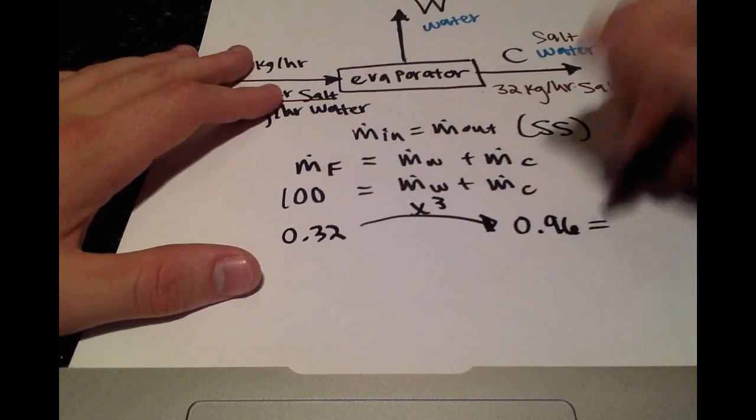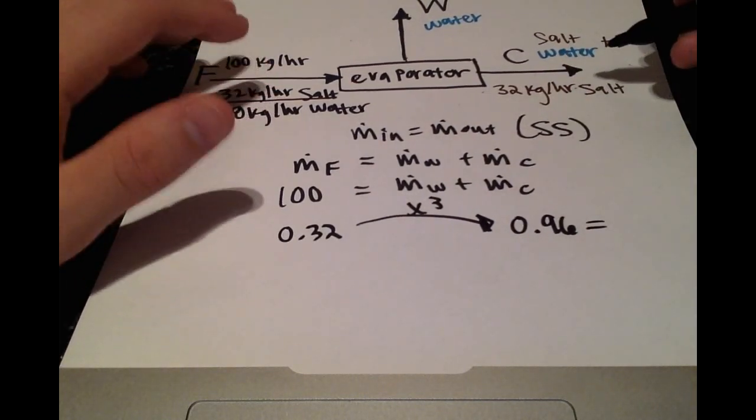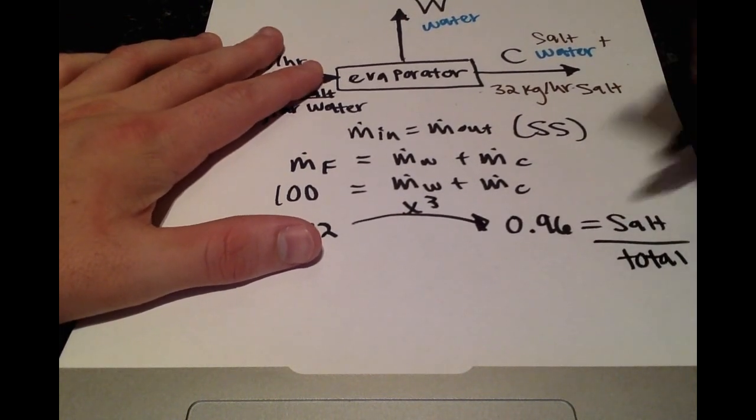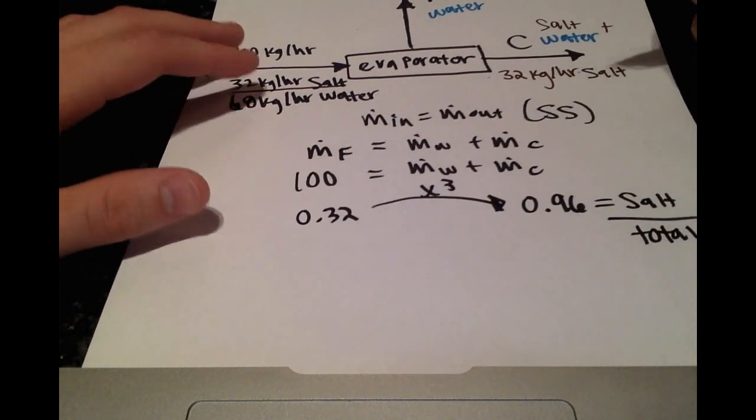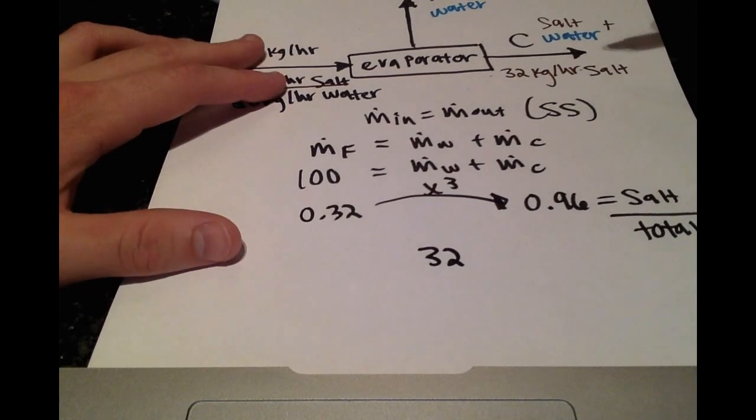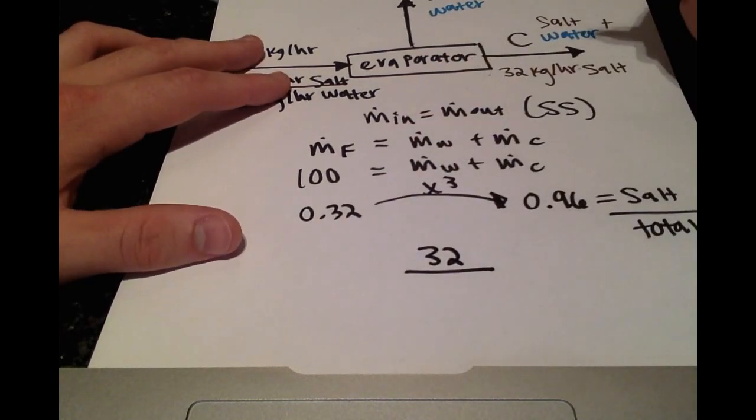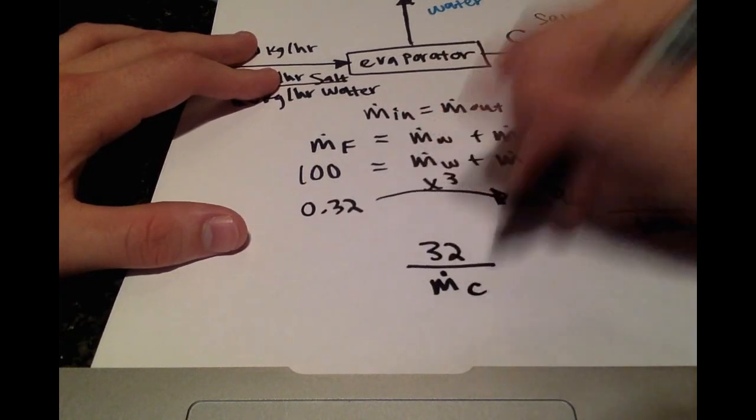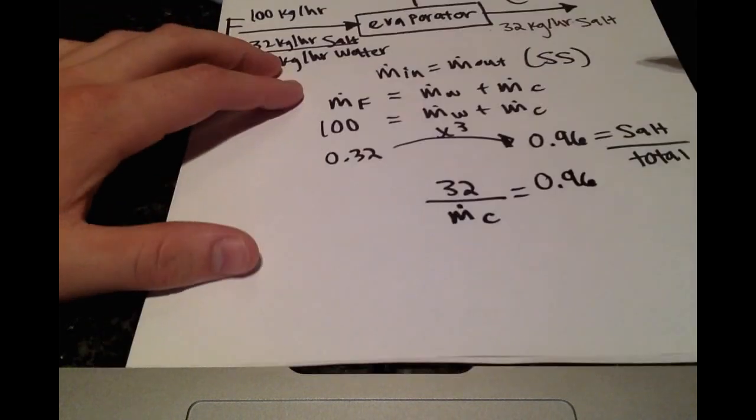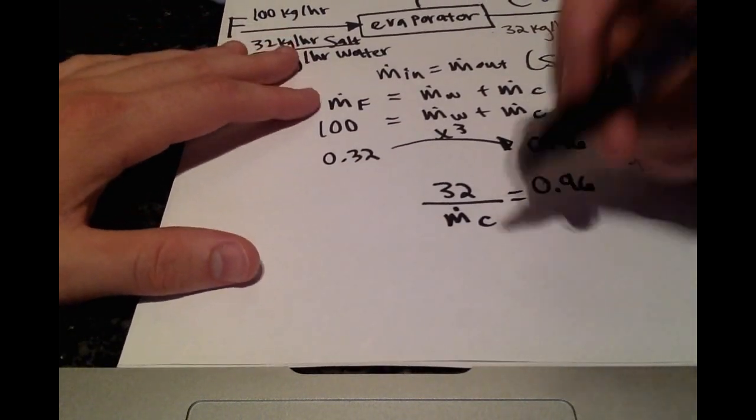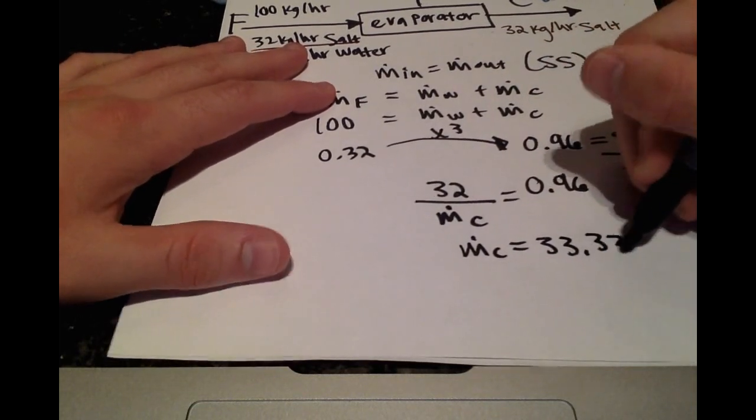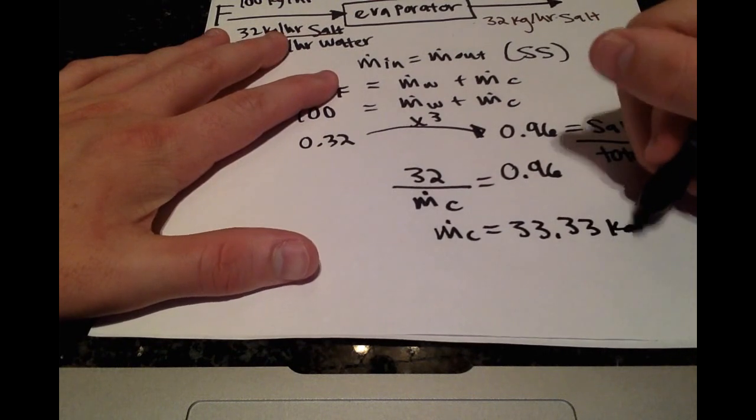So that is going to be the fraction. That fraction is going to be equal to the salt over the total mass of the stream. So rewriting that, and we know the salt, so we can write 32 kilograms per hour of salt over the mass flow rate of the concentrated solution equals 0.96. And solving that, we get a mass flow rate of 33.33 kilograms per hour.